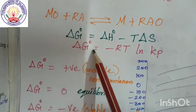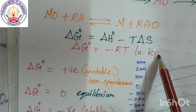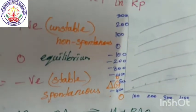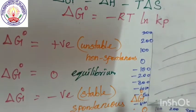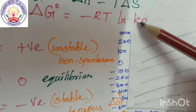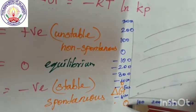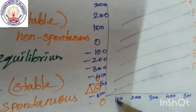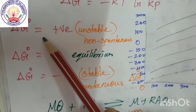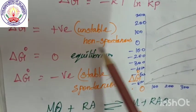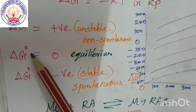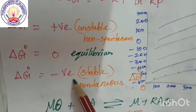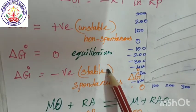In this graphical representation, we have delta G positive values above zero and negative values below zero. This is a less negative value, and this is a more negative value. Delta G versus temperature: when delta G is positive, the reaction is unstable and non-spontaneous. When delta G⁰ equals zero, it is at equilibrium. When delta G⁰ is negative, it is stable and spontaneous.